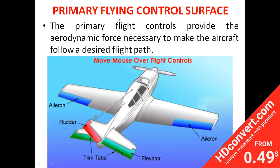The primary flight controls provide the aerodynamic force necessary to make the aircraft follow a desired flight path. The primary flying control surface provides the necessary aerodynamic force by which the aircraft will follow the desired flight path.